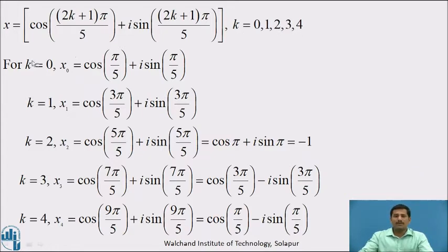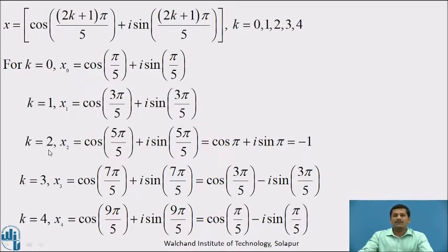Substituting successive values of k: for k equal to 0, x₀ equals cos(π/5) plus i sin(π/5). For k equal to 1, x₁ equals cos(3π/5) plus i sin(3π/5). For k equal to 2, x₂ equals cos(5π/5) plus i sin(5π/5), which simplifies to cos π plus i sin π. Since cos π equals minus 1 and sin π equals 0, this root is simply minus 1.